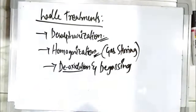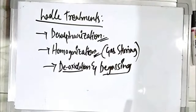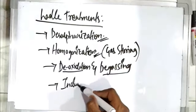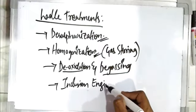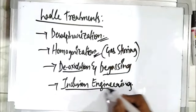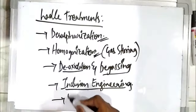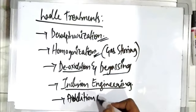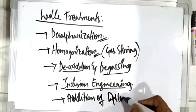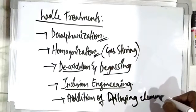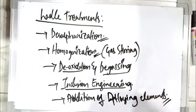De-oxidation is nothing but the removal of oxygen, and de-gassing is the removal of other gases dissolved in the steel, for example nitrogen and hydrogen. This is also done in the ladle only. Another important function is inclusion engineering — that is, decreasing or modifying the inclusions present in the steel. Additionally, addition of alloying elements can also be done in the ladle. These are all the different functions that can be done in ladle treatments.